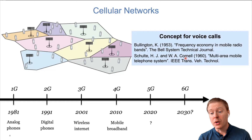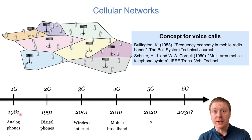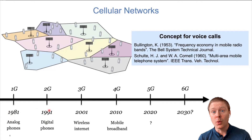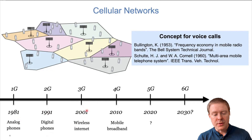Even though the cellular idea appeared in the 60s, the first commercial deployment happened in the early 80s — the first generation, which were analog car phones, too heavy to put in your pocket. In the 1990s cellular became more of an everyday person's thing, with digital phones small enough that people could afford and use them all the time.